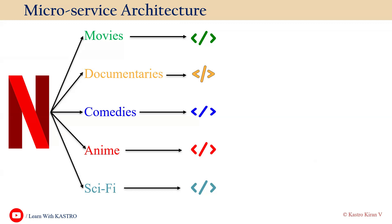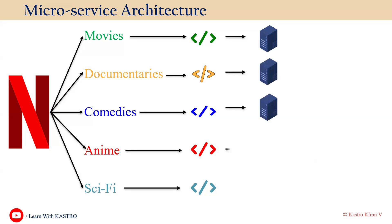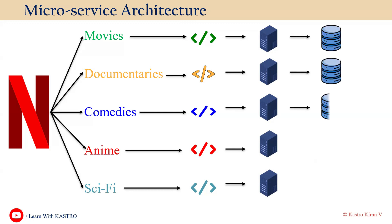Documentaries-related code is deployed into a separate server, and each category's code is deployed into its own set of servers. Movies-related code is available only in the movies-related server. Since the code is available on individual servers, there will be a separate database for each category. Movies-related data is stored in the movies-related database only.